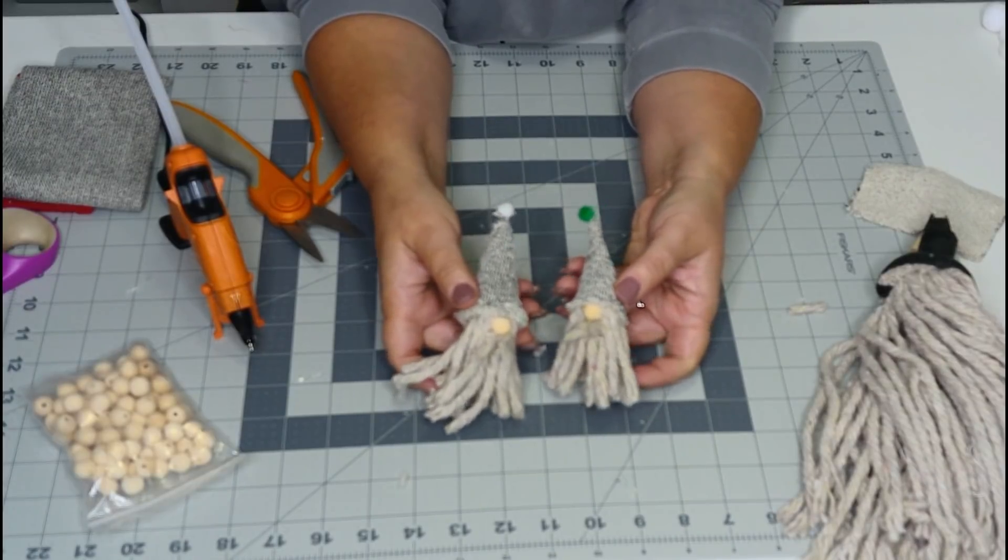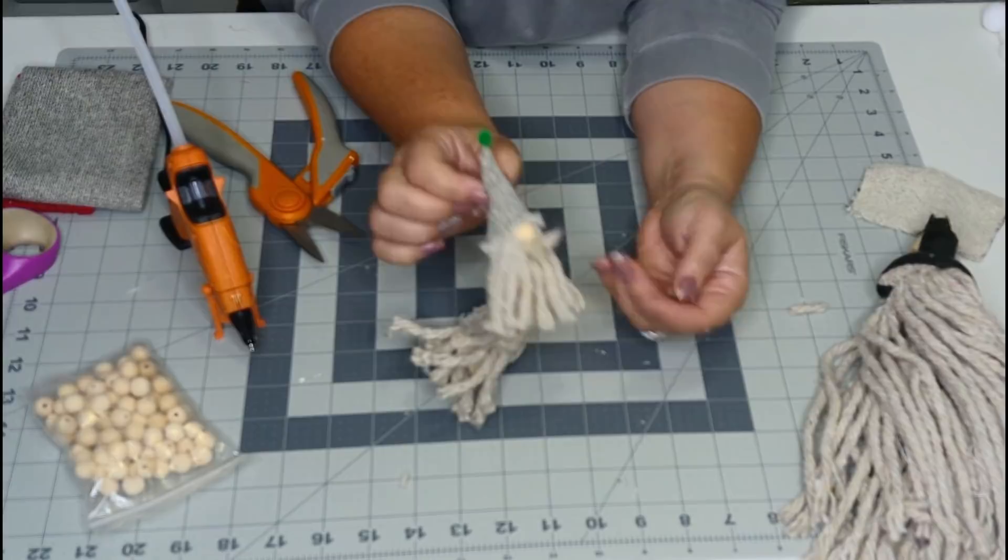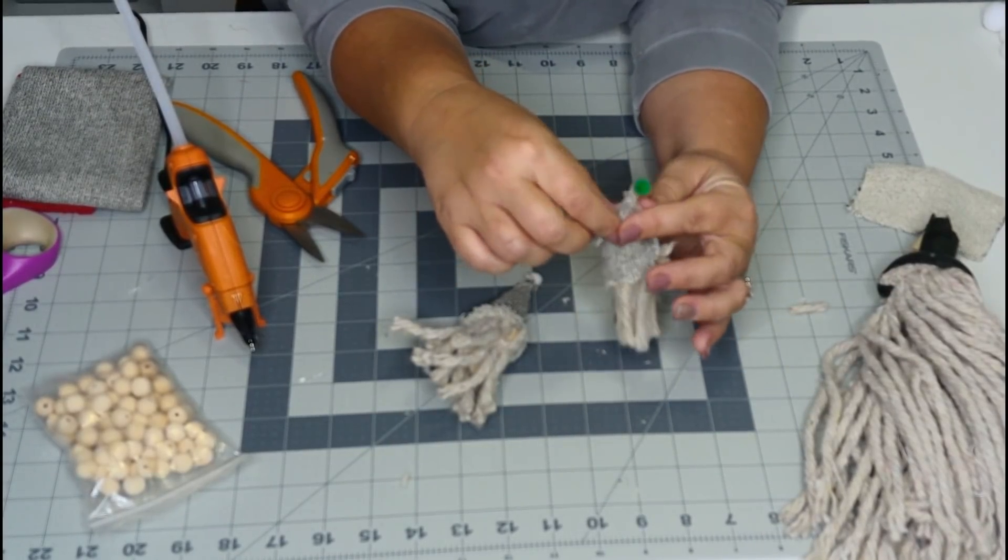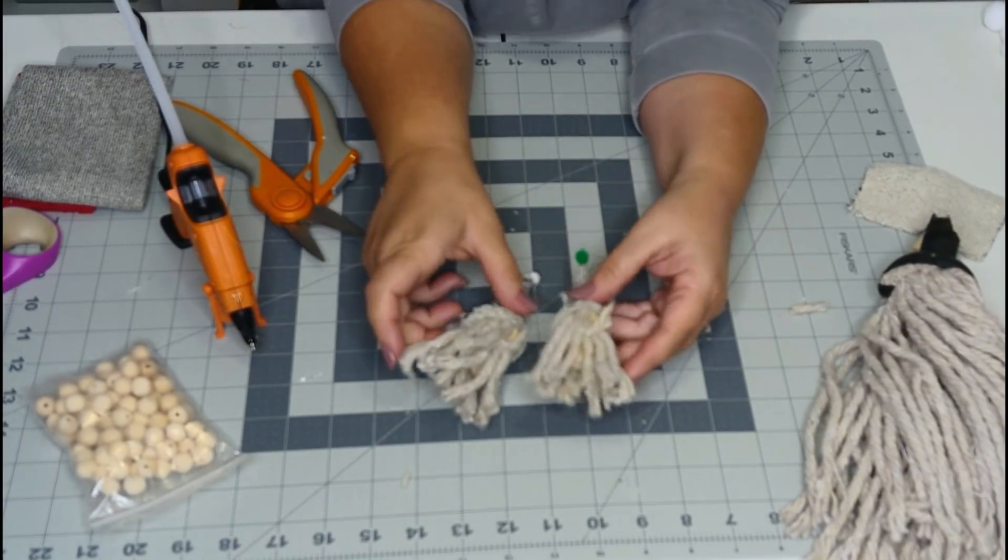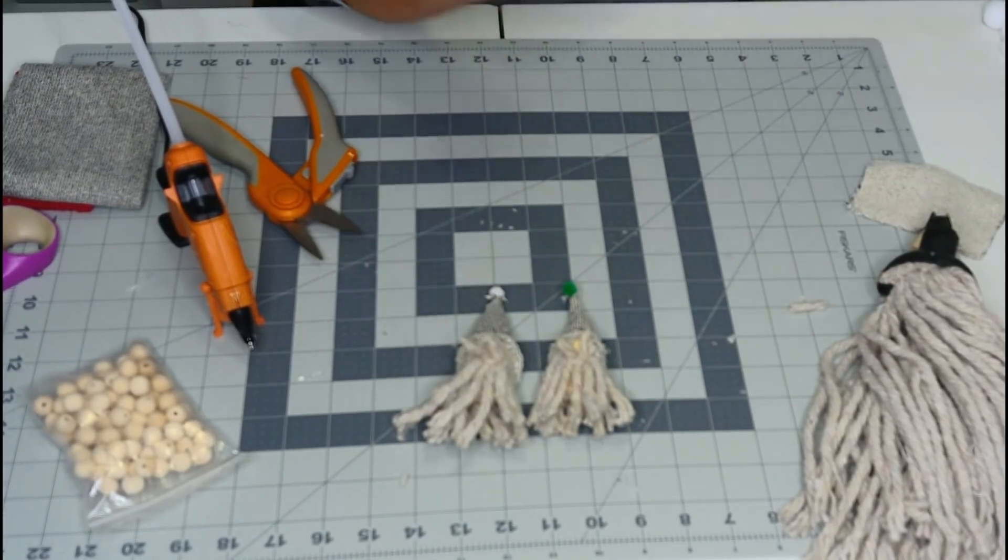Aren't they cute? I just love them. Now you can leave them like this. You could actually just take a little piece of jute twine or a little piece of yarn and make your little hanger and make these a little mini ornament to go on your little Dollar Tree mini trees. But we're actually going to take these and string them up and make them into our Pottery Barn dupe garland.